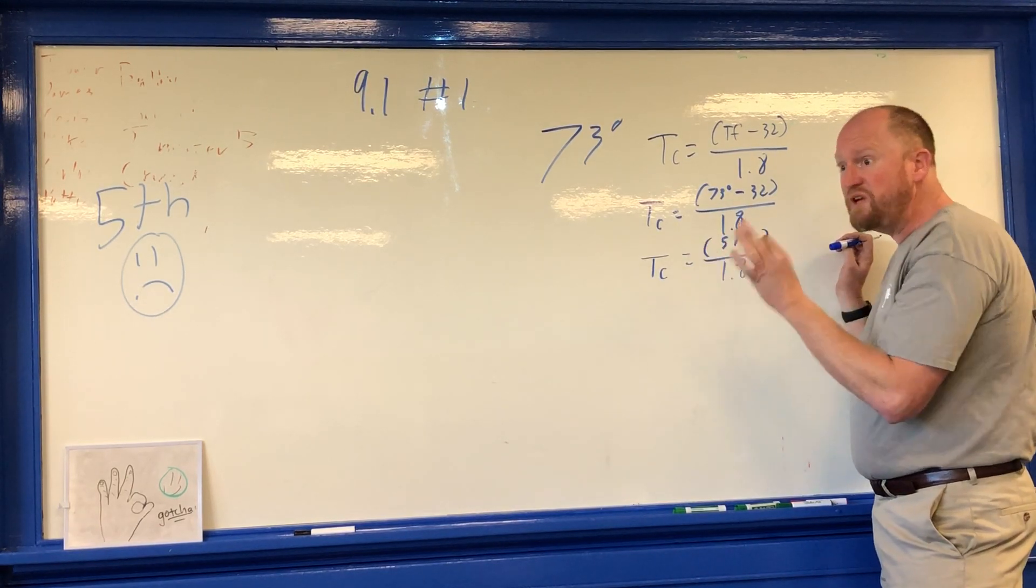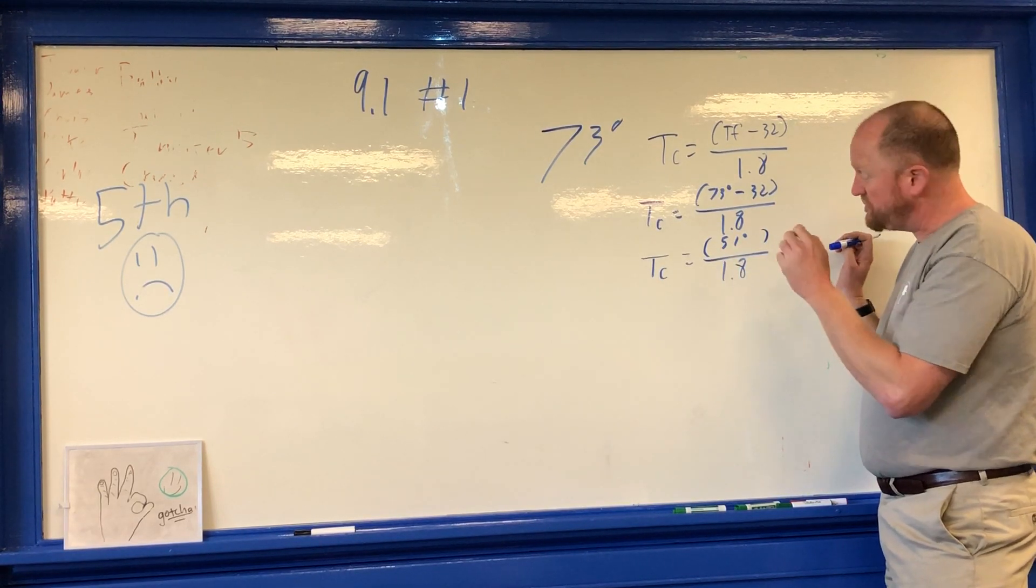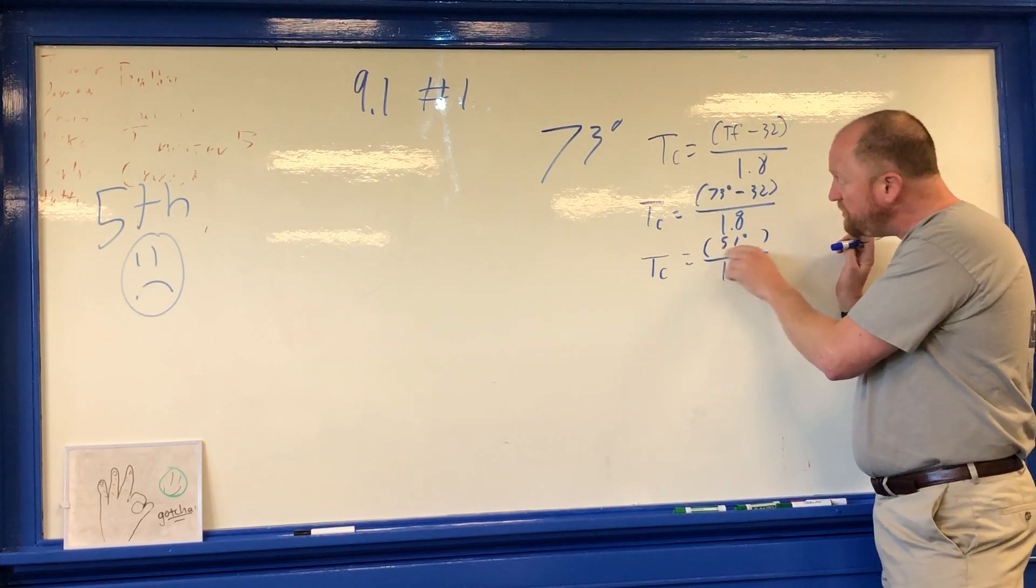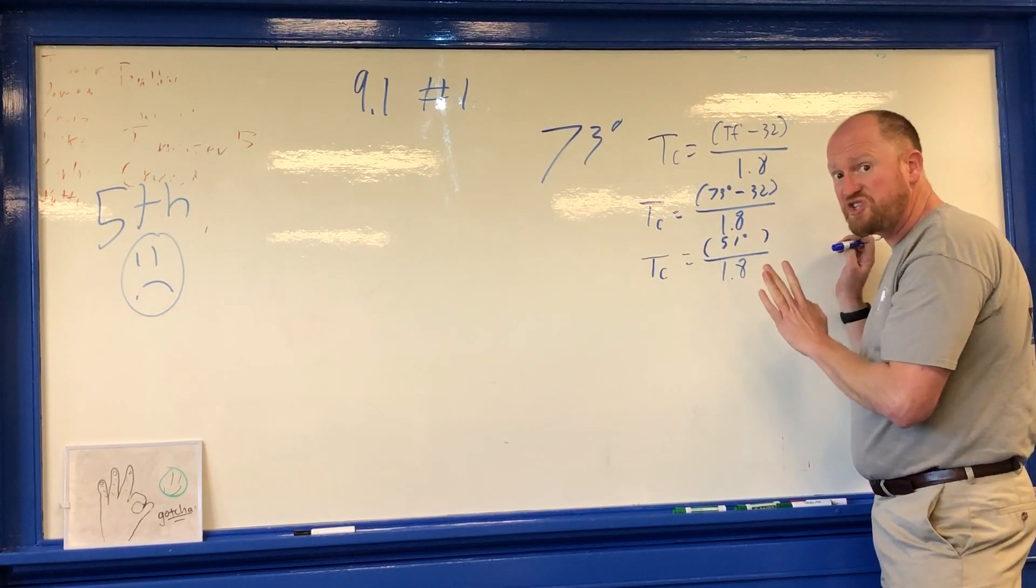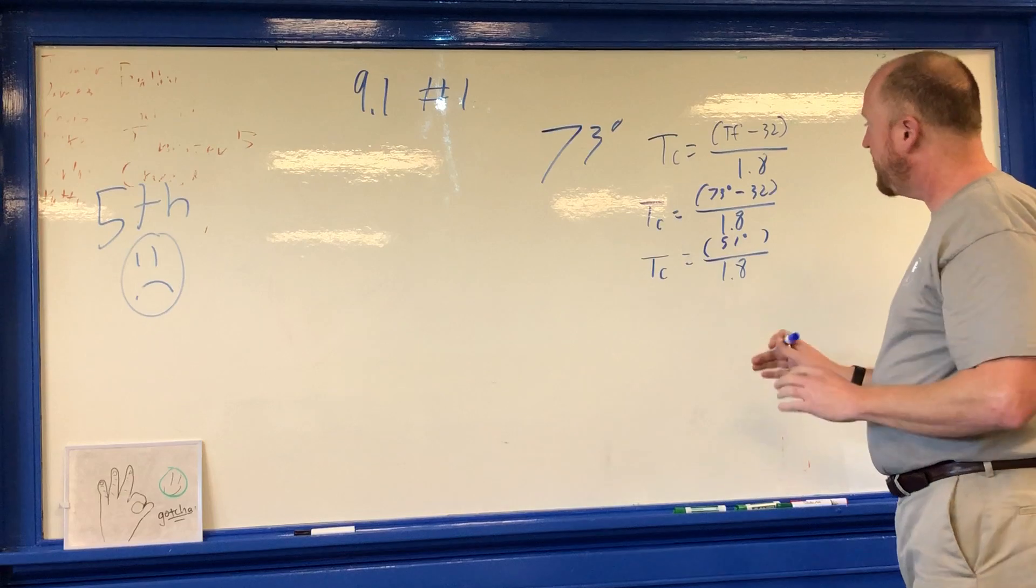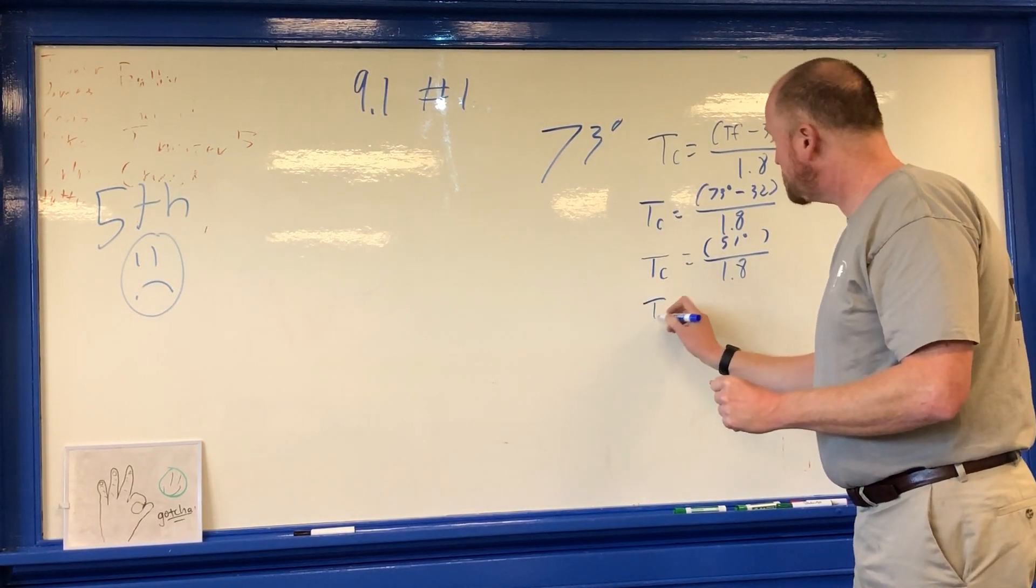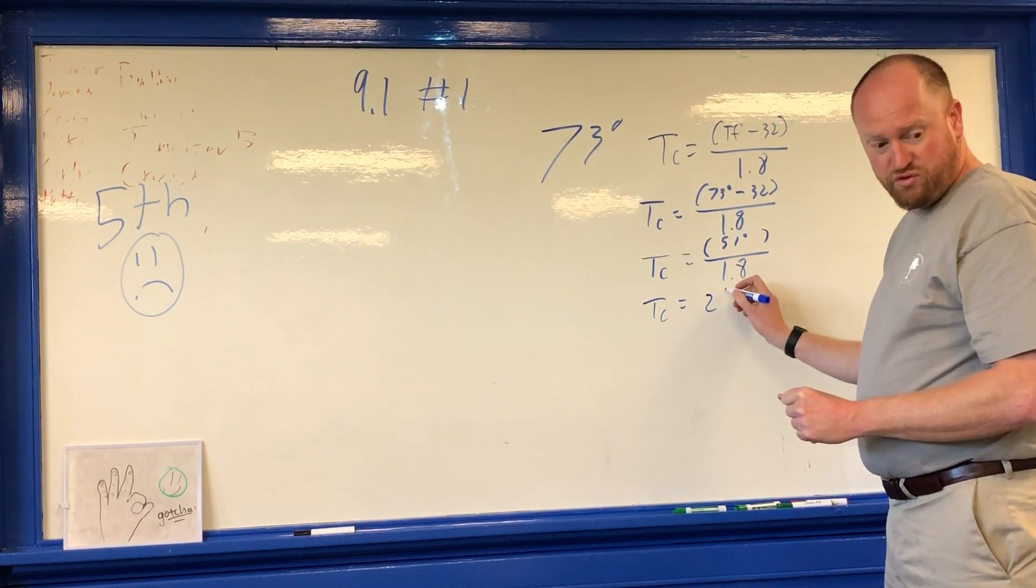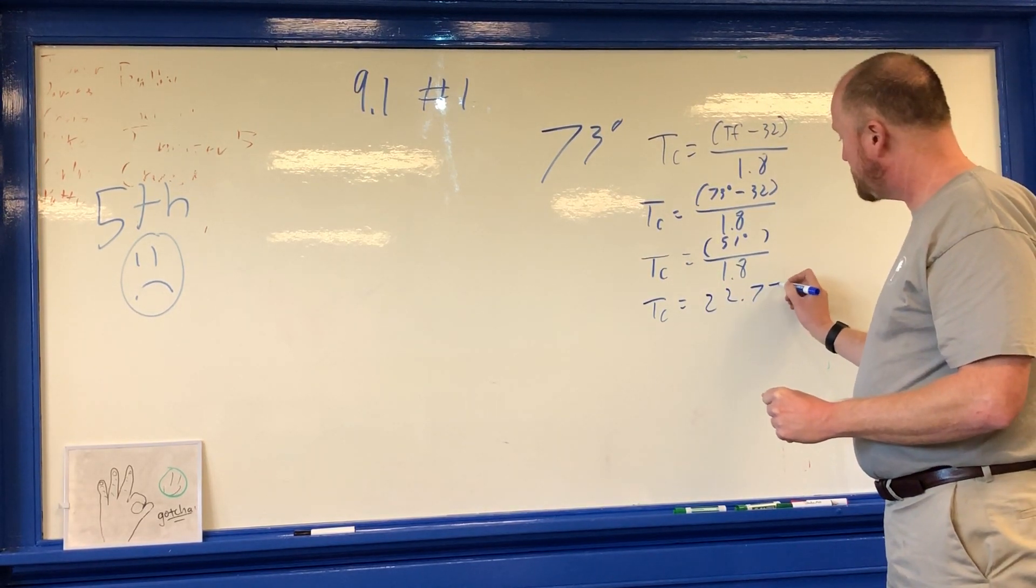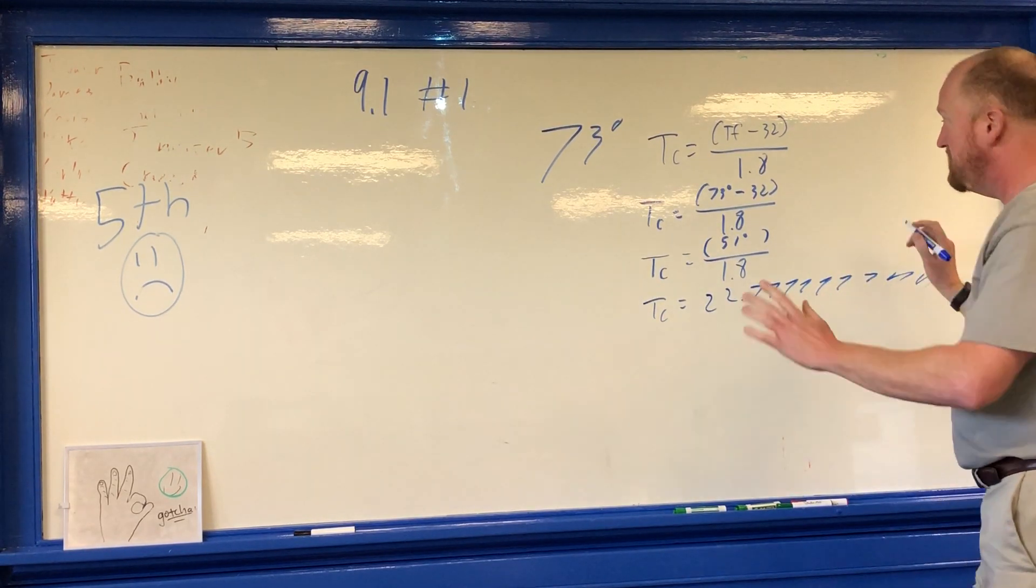Now a degree Fahrenheit is smaller than a degree Celsius. So we need to take this 41 degrees Fahrenheit above freezing, let's change this into degrees Celsius above freezing by dividing by 1.8. Now if I do this, I get TC is equal to 22.777777777777.